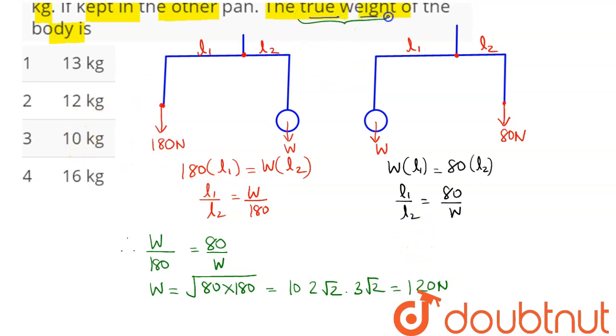So the true weight of the body is 120 newton. That is, we can say the true weight of the body here is 12 kg, corresponding to 120 newton. So option number 2, that is 12 kg, is the correct answer.